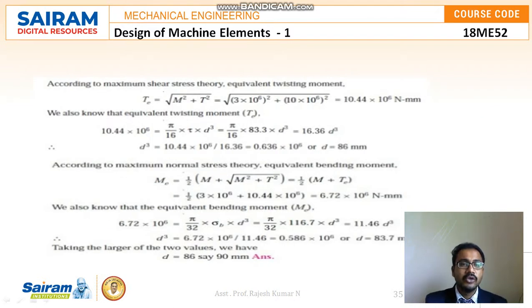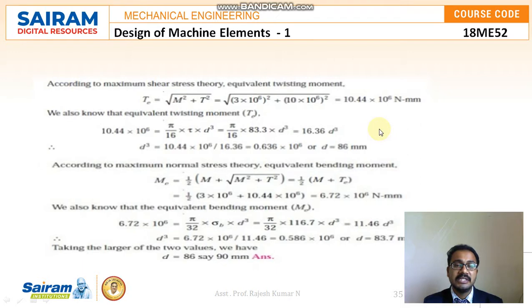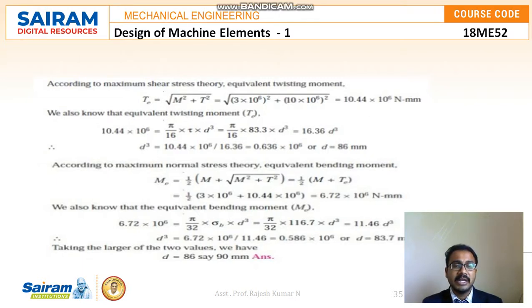According to the maximum shear stress theory, the equivalent twisting moment Te = √(M² + T²) = √((3×10⁶)² + (10×10⁶)²) = 10.44 × 10⁶ N·mm. Setting Te = (π/16) × τ × D³: 10.44 × 10⁶ = (π/16) × 83.3 × D³, giving diameter D = 86 mm. For the maximum normal stress theory: Me = (1/2)(M + Te) = (1/2)(3×10⁶ + 10.44×10⁶) = 6.72 × 10⁶ N·mm.